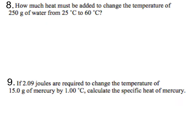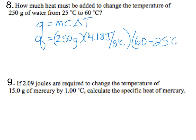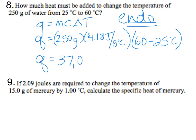Problem eight: how much heat must be added to change the temperature of 250 grams of water from 25 to 60 degrees Celsius? When you see a temperature change and they're asking about heat, you use Q equals mCAT. Our mass is 250 grams, specific heat of water is 4.18 joules per gram degrees Celsius, and delta T is 60 minus 25. We need a positive Q because this is endothermic, and when you do the math we get 37,000 joules.